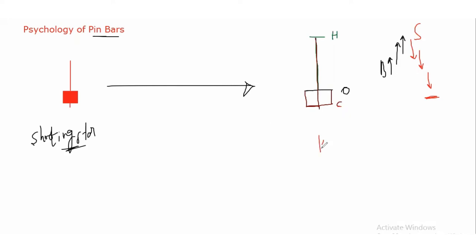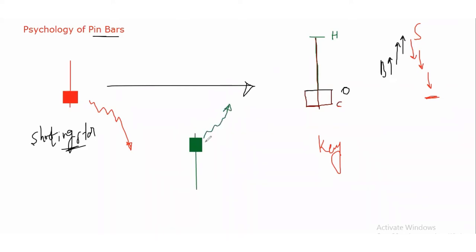If this shooting star candle is found at any key levels — key levels being any resistance zones or failed zones — it says that the market will fall from that zone. To revise: the hammer candlestick pattern means buyers are in charge when it forms at key zones, and the market will move in the upward direction. This is the psychology of the pin bars — shooting star and hammer.